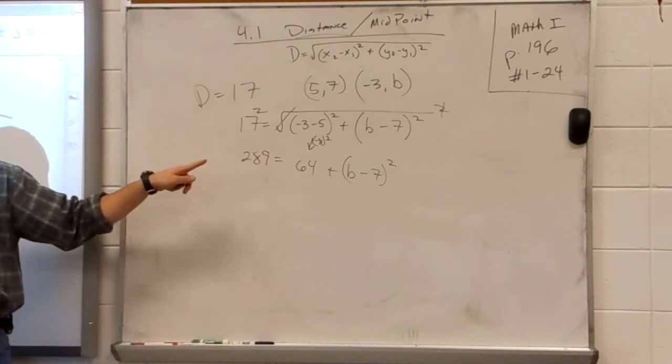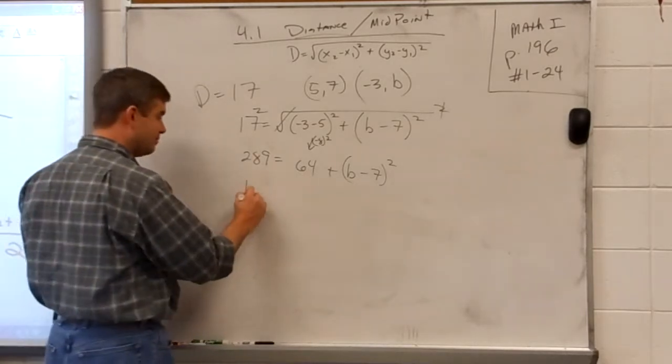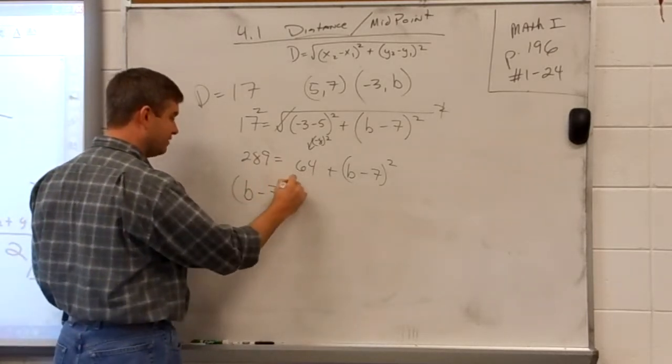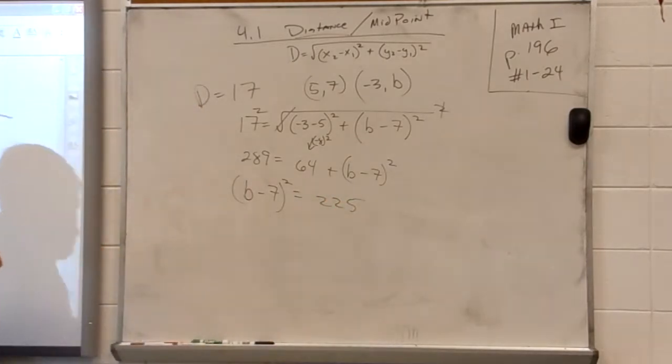Now, what do I do with the 64? Move it over by subtraction. I'm going to write b minus 7 squared over here on the left, and I'm going to write 225 over there on the right. 289 minus 64 is 225, I'm not mistaken.